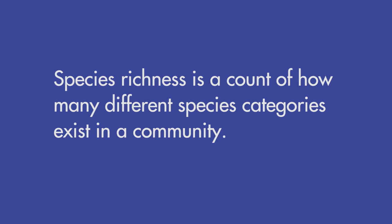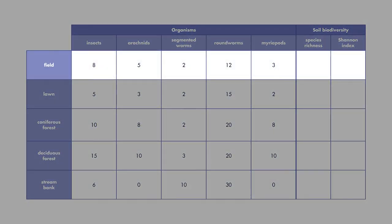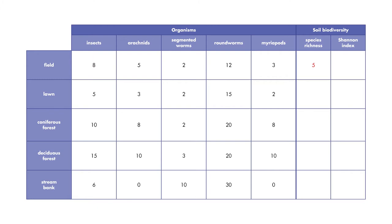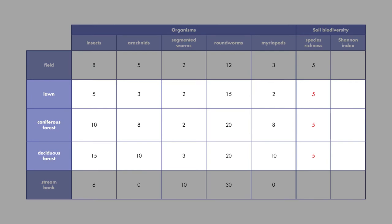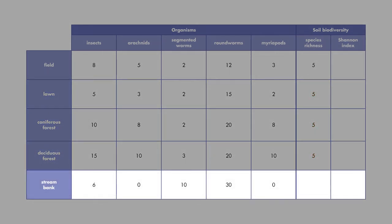Species richness is a count of how many different species categories exist in a community. Since we found members of all 5 invertebrate categories in the field sample, the species richness of that soil sample is 5. Since the same is true for the lawn sample and each of the forest samples, each of those soil samples also has a species richness of 5. We did not find any arachnids or myriopods in the stream bank sample — we did find insects, segmented worms, and roundworms — so this soil sample has a species richness of 3.